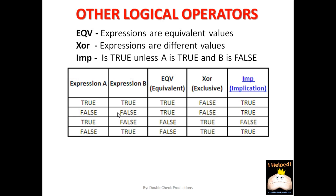Next, A is true and B is false — these values are not equivalent, therefore equivalent is false. The values are different, so they are exclusive. And here we finally meet the condition to make the implied operator false — it is normally always true unless it meets the condition that A is true and B is false. Finally, we have A is false and B is true — they are not equivalent, they are exclusive, but they do not meet the implied criteria to come out as false. So the implied logical operator is always true unless A is true and B is false.